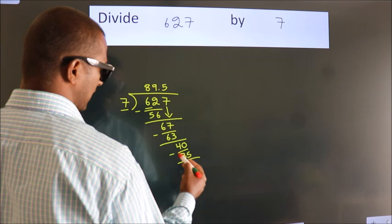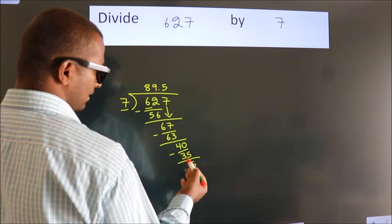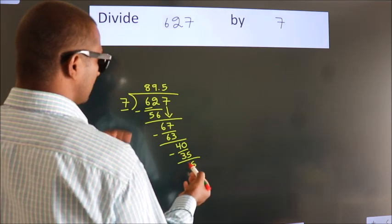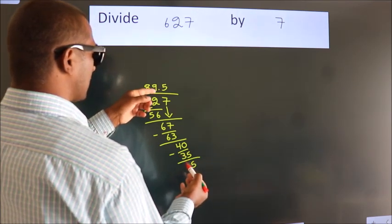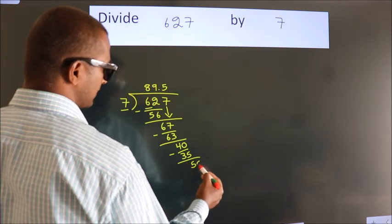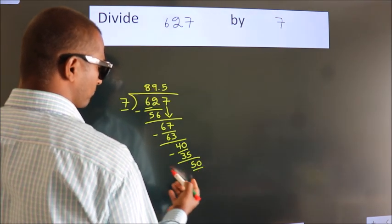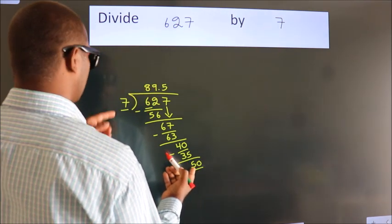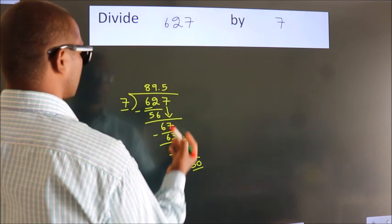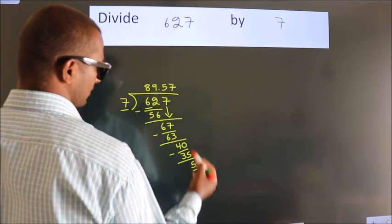Now we subtract and get 5. After this, we already have the decimal, so we directly take 0, giving us 50. A number close to 50 in the 7 table is 7 times 7, which is 49.